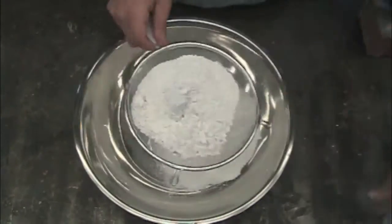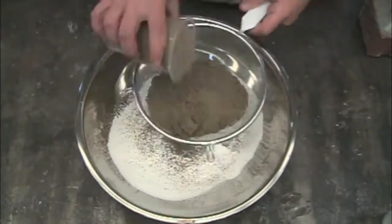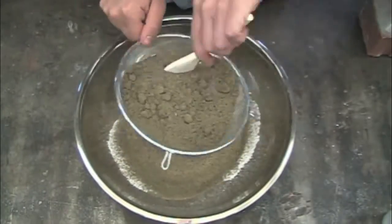Start by sifting two parts lime into a mixing bowl. You can use a spoon to break up any large chunks of lime that get caught in the sieve. Sift in three parts mason sand as well.